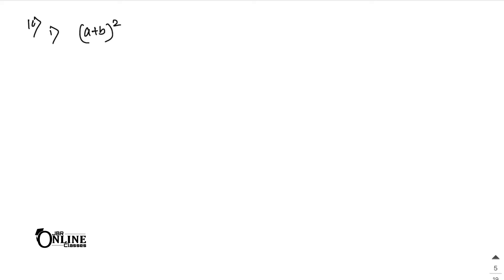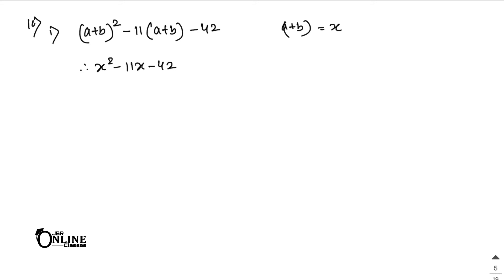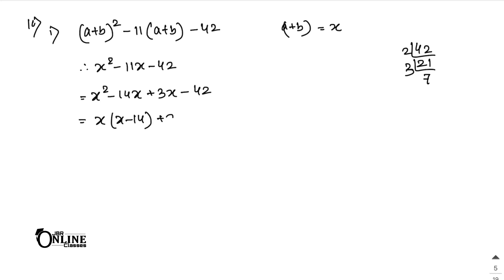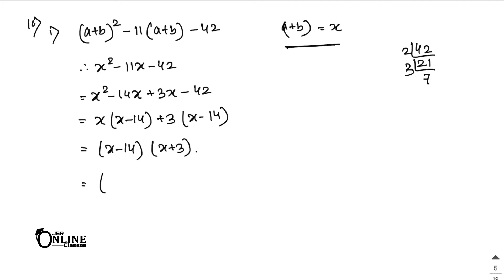Next, sum number 10(1): (a + b)² minus 11(a + b) minus 42. Let a + b equal x, so this becomes x² minus 11x minus 42. Factorize 42: 2, 21, 3, 7. Make 11: 7 into 2 is 14, so write x² minus 14x plus 3x. Take out x giving (x minus 14), take out 3 giving (x minus 14). Substitute back: first factor (a + b minus 14), second factor (a + b + 3).